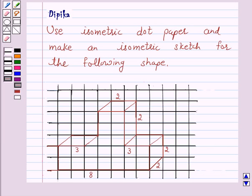Hello and welcome to the session. I am Deepika here. Let's discuss a question which says: Use isometric dot paper and make an isometric sketch for the following shape.